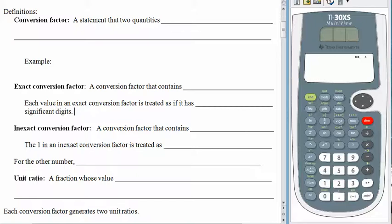The first thing we want to talk about is what a conversion factor is. A conversion factor is a statement that two quantities are equal — or if you want to be picky about things, we could say they are approximately equal.